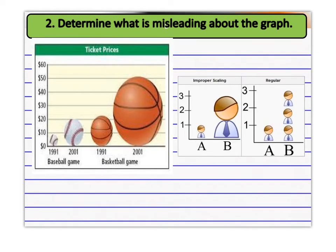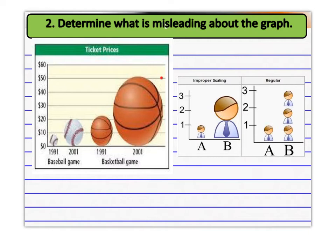Number two: determine what is misleading about the graph. Your notes and this number two are identical, so take good notes. We have ticket prices for baseball and basketball games — price per ticket in 1991 and 2001 for both. Why would someone produce this data display? Just looking at it, baseball seems cheaper and the price hasn't increased very much, whereas basketball looks like it went from cheap to very expensive.